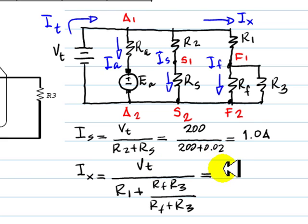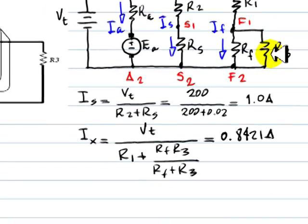Only a fraction of that current IX will be IF. The current divider tells us how much of that will be IX times R3 divided by the sum of RF plus R3, as we saw in second year.